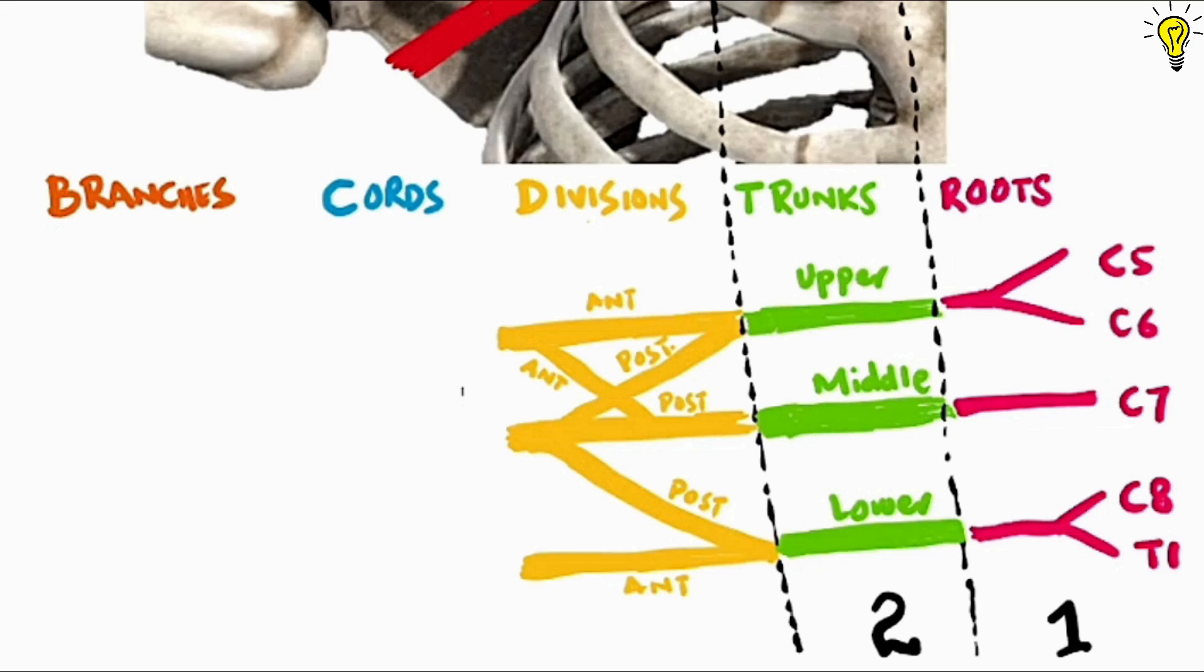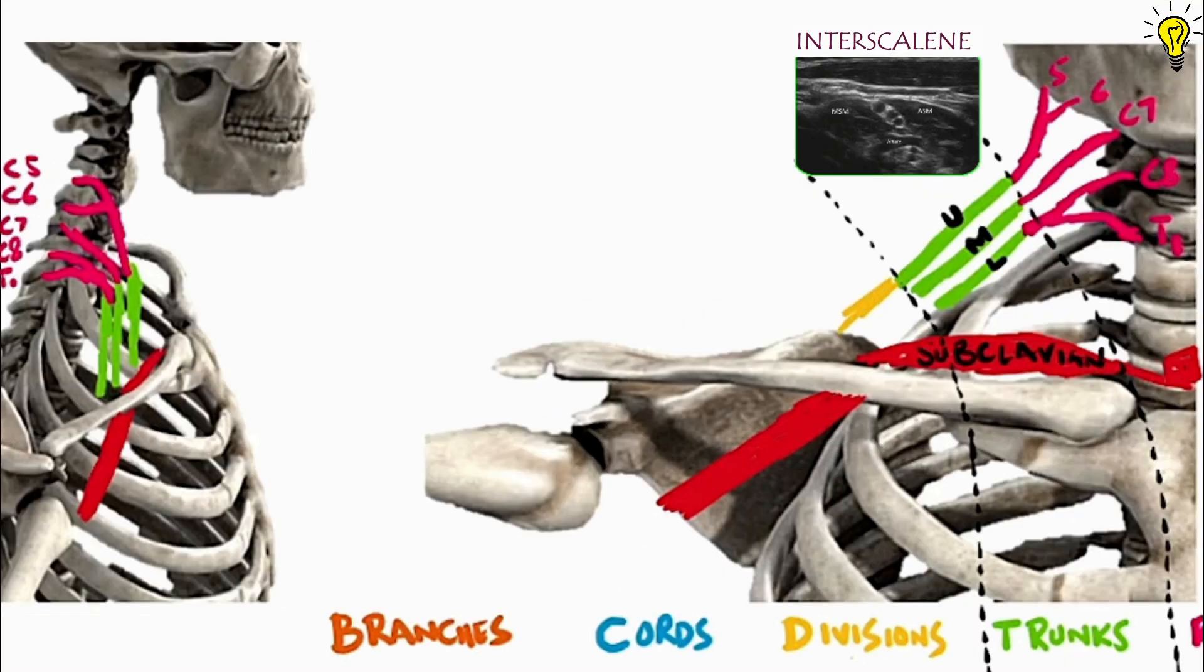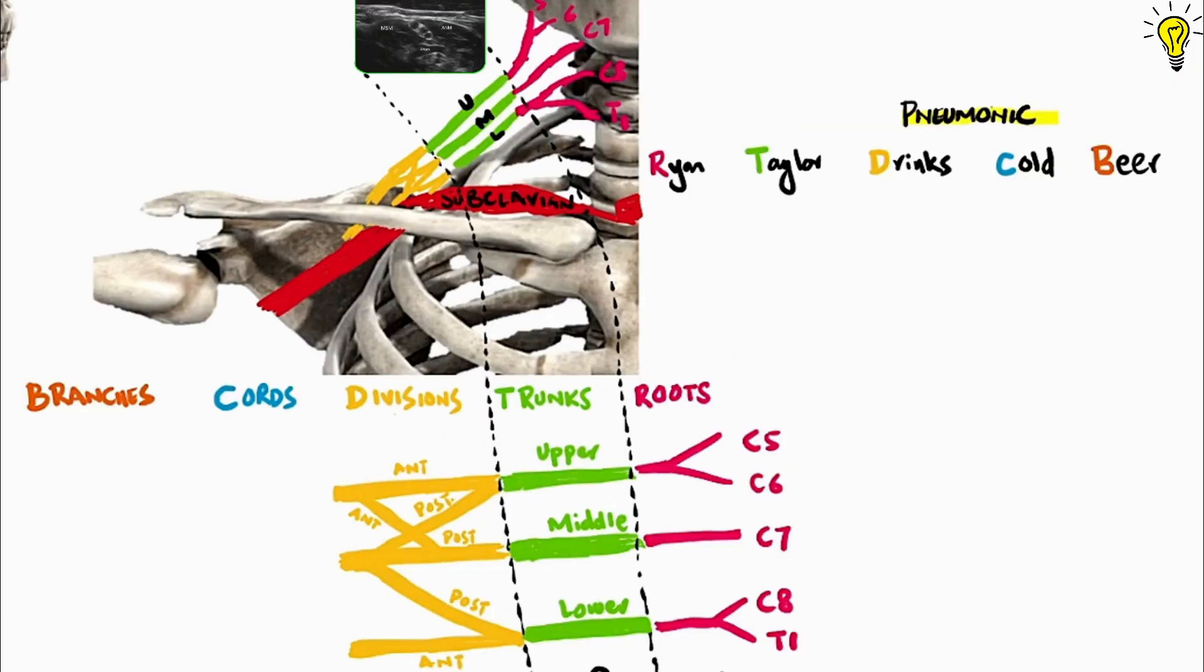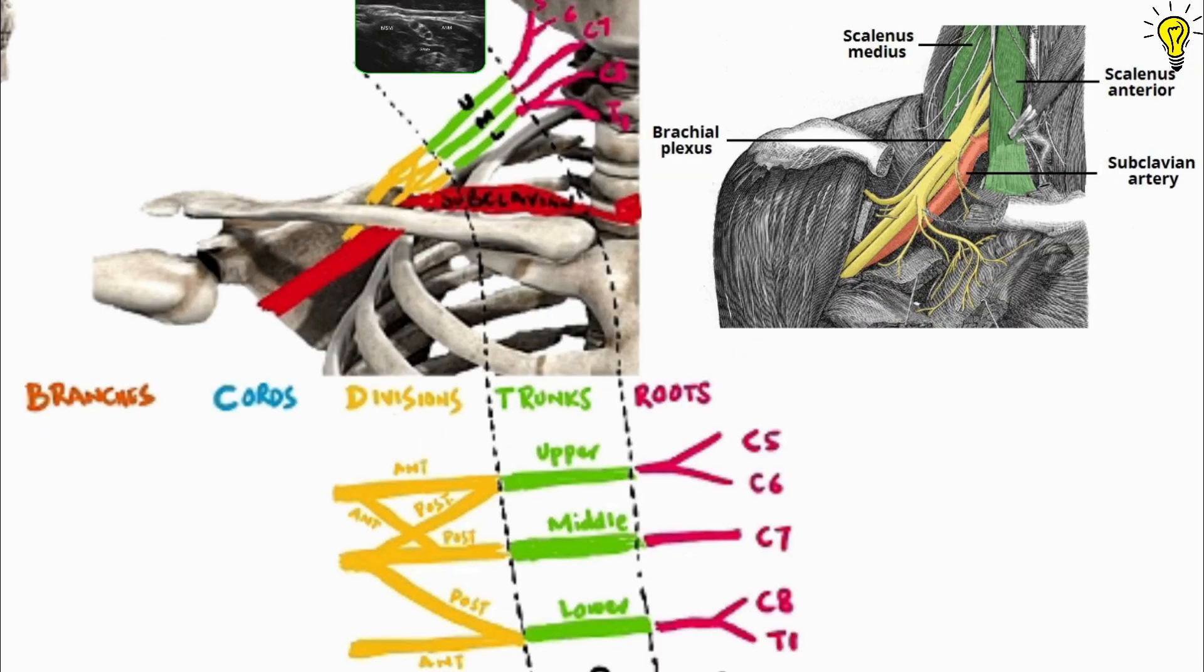Whereas the anterior division of lower trunk goes without combining and forms the medial cord. So you see a cross shaped above and an oblique shape below in division area. All moving laterally and slightly above to subclavian artery as seen here.